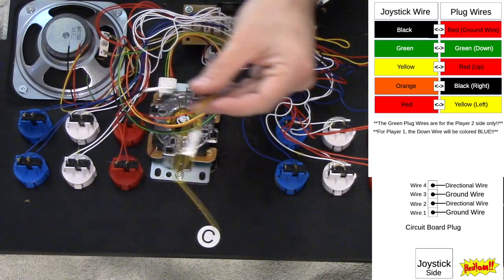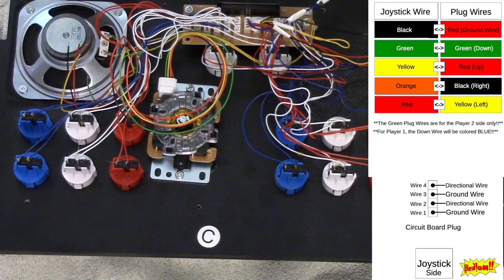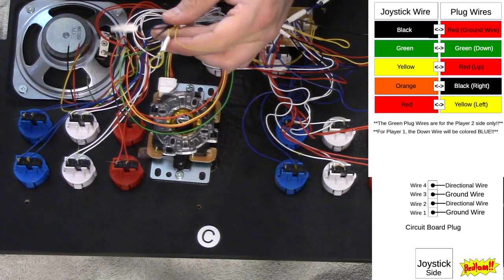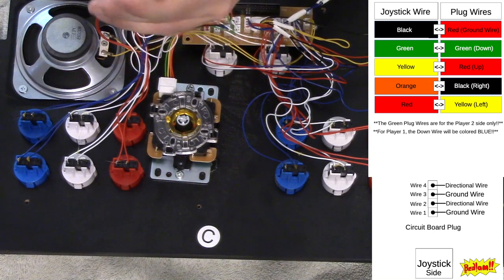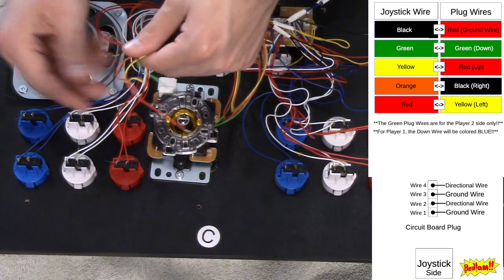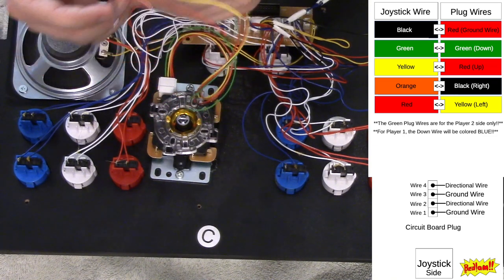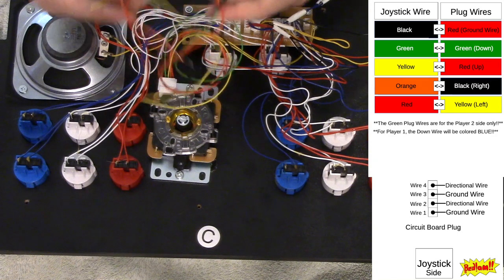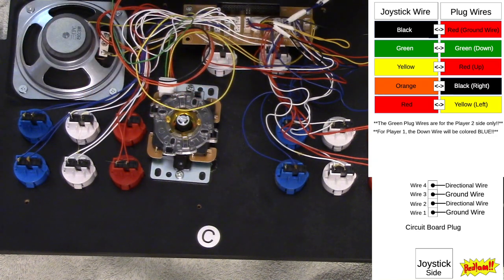I did strip the end of those. Let me go ahead and extend the exposed wire on the wiring that comes off of the joystick because we're going to need a little bit more to play around with. I got all these wires trimmed up. Let's start splicing.